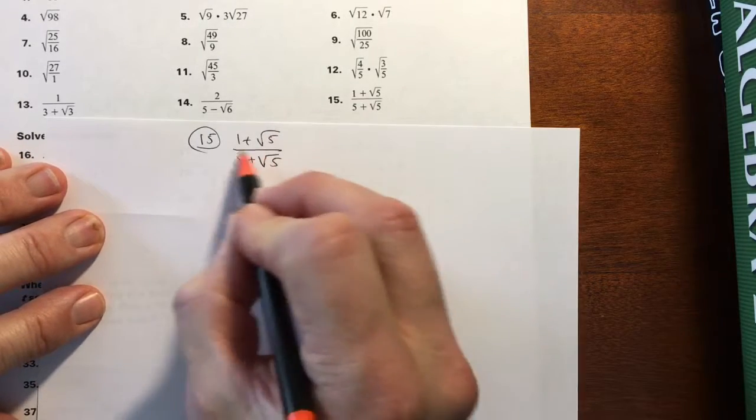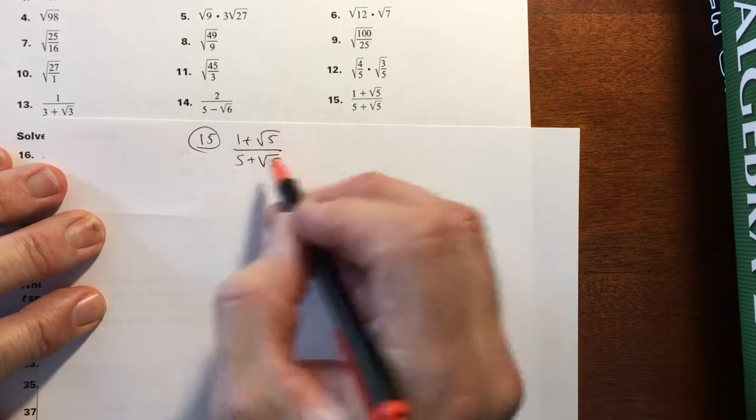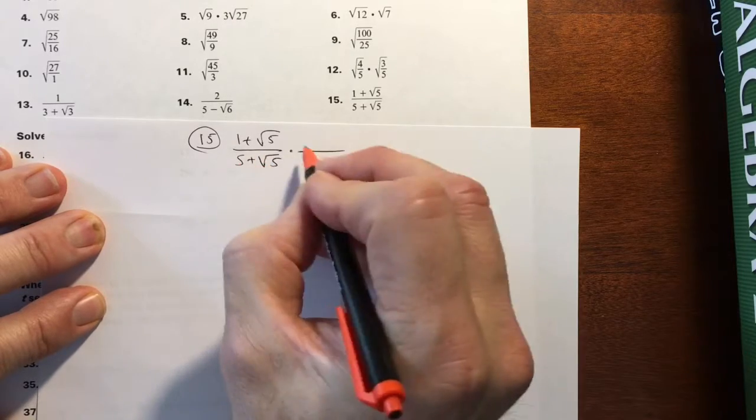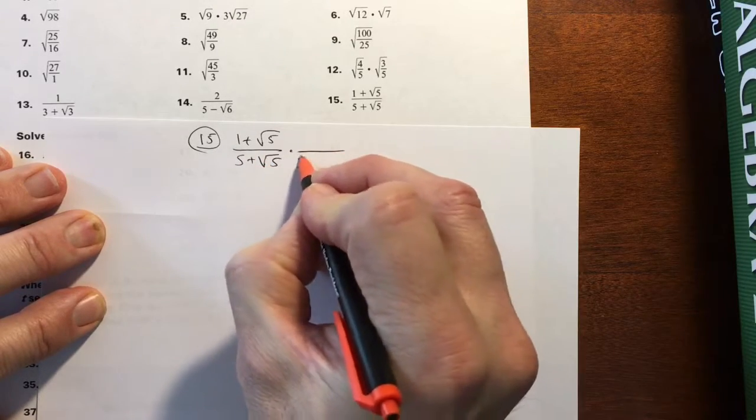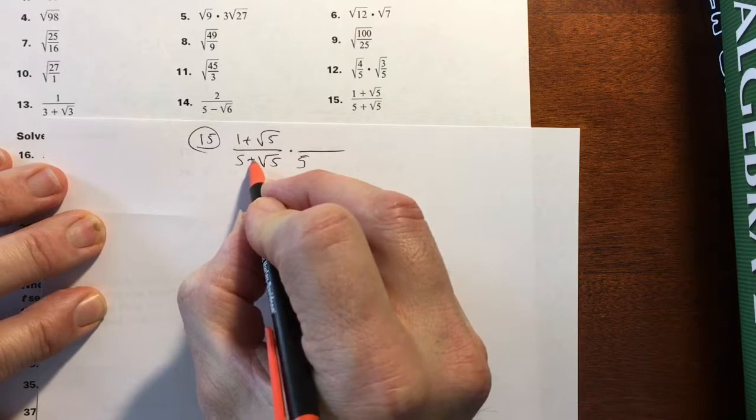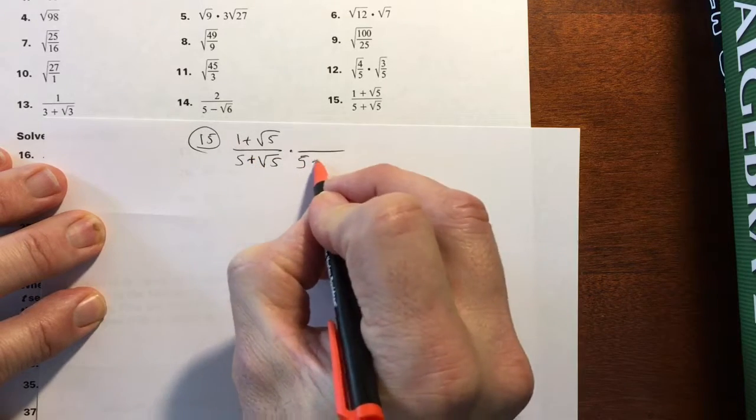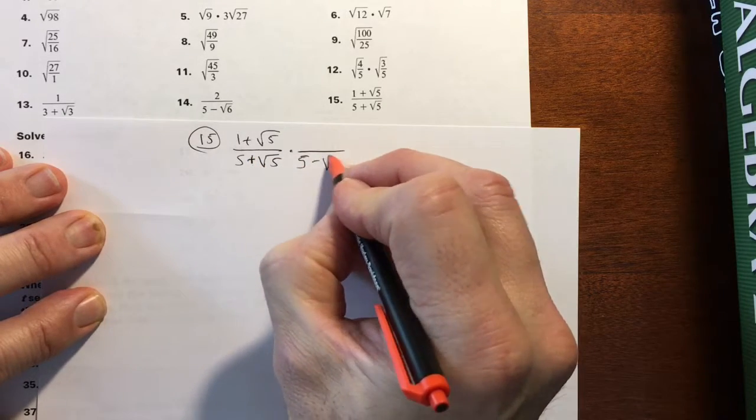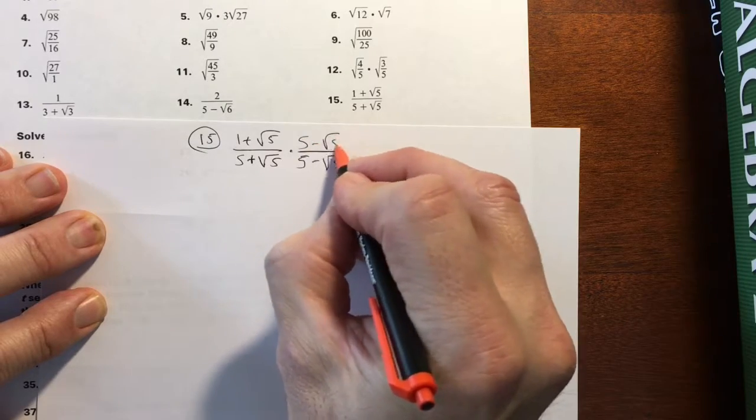All right, so to rationalize, again, we're multiplying this. The original problem by the denominator over itself is just 1, so it's 5. Now, in this case, we change the sign. We're trying to create one of those shortcut factors, 5 minus square root of 5.